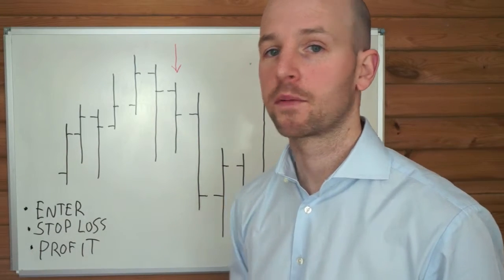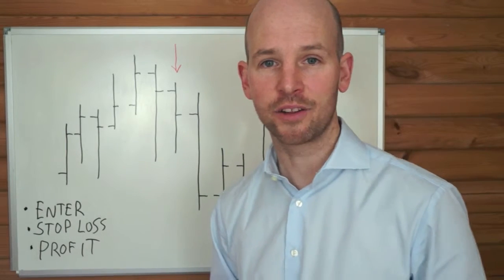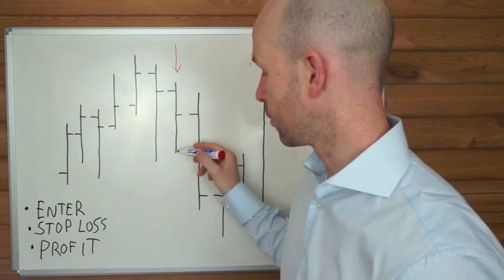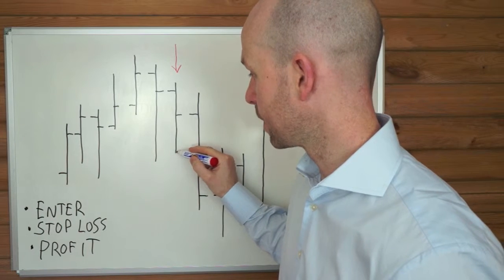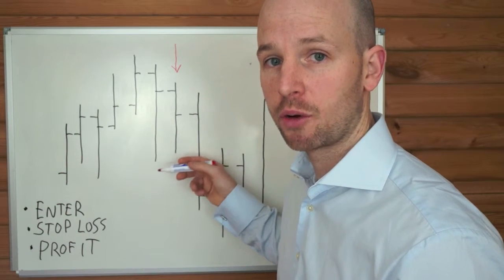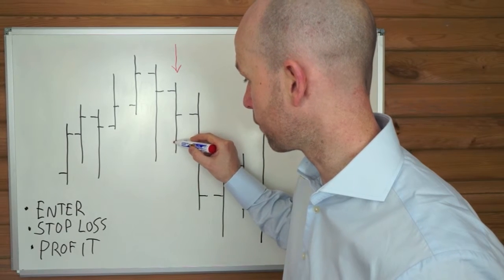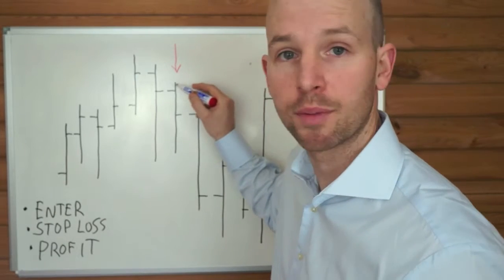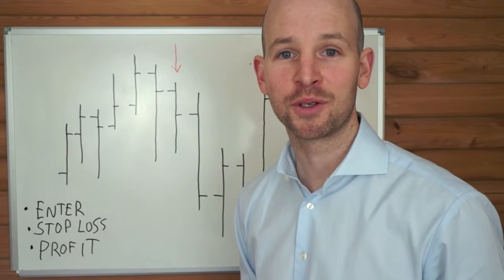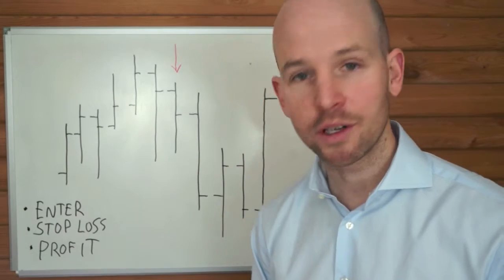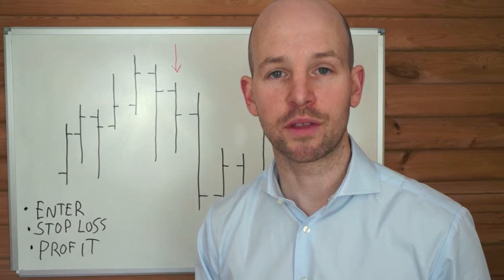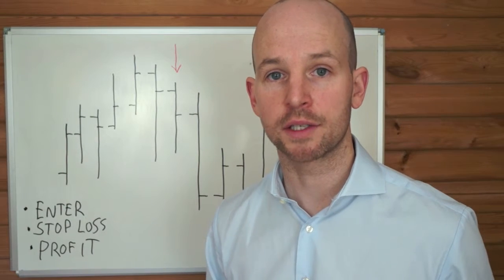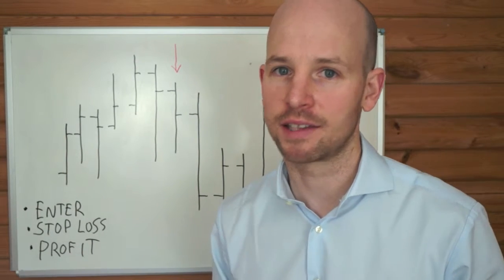We're also going to put in a second order for the same trade, and it's exactly the opposite — an order to go short or short sell the market. We put in a stop sell order to enter if price comes below the low, and our stop loss is just above the high. The beauty of it is we don't need to try to determine which way we think the market's going to go the following day, because if there is a big move it just gets us in on the right side of the market. It's that easy and that simple.